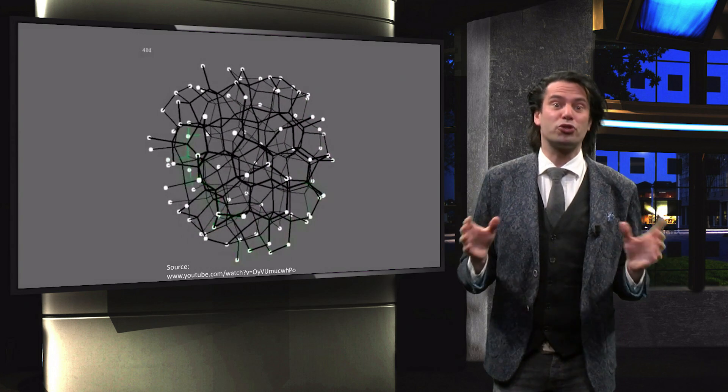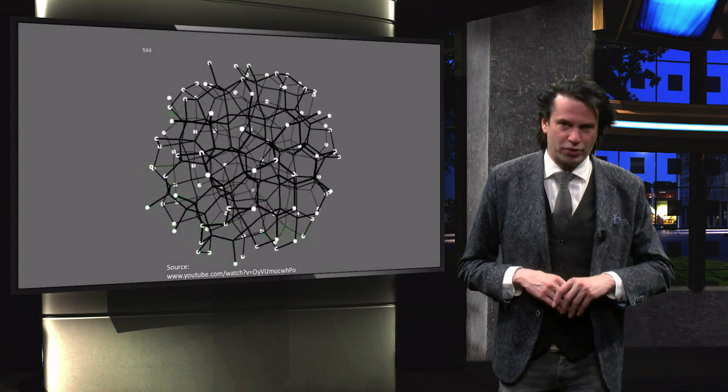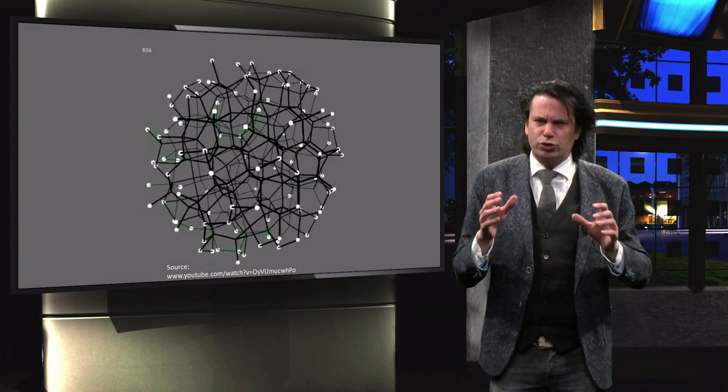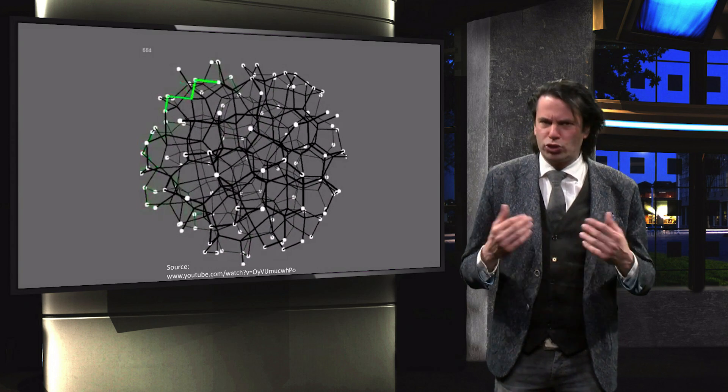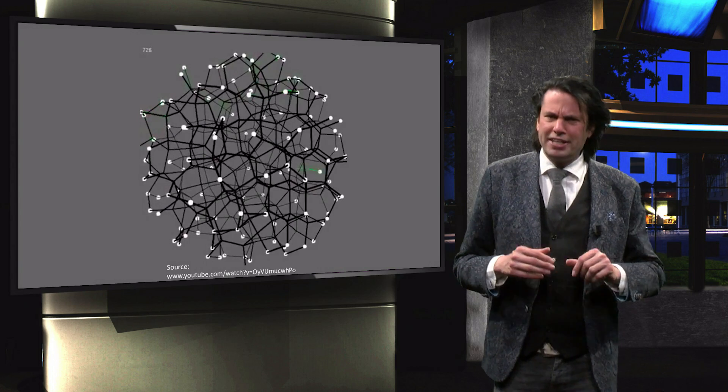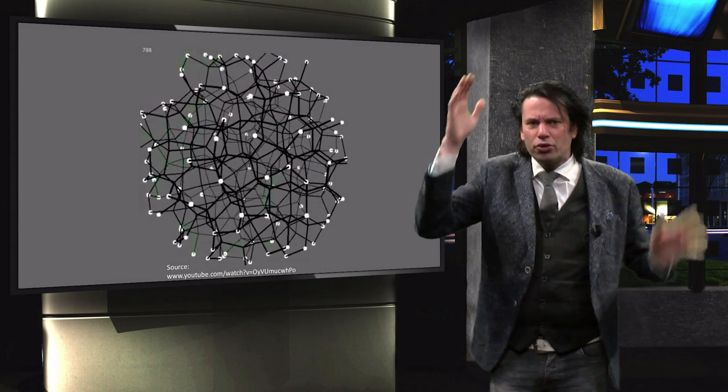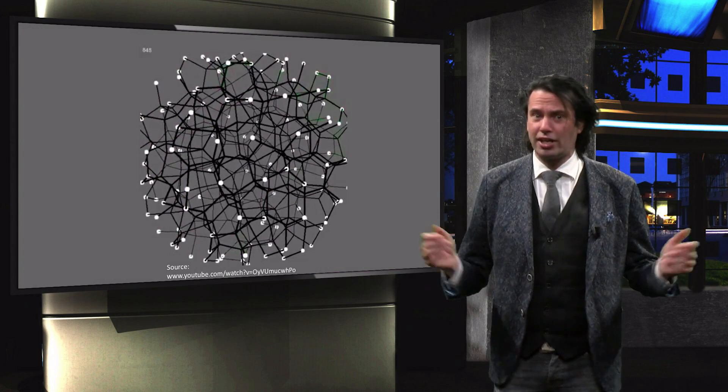This figure shows a so-called continuous random network. On atomic length scales, or what is called short range order, the atoms still have a tetrahedral coordination structure, just like crystalline silicon.